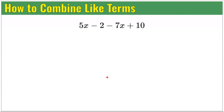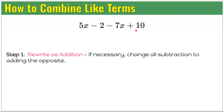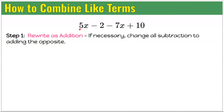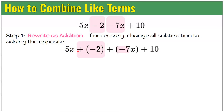Let's learn how to combine like terms to simplify an expression: 5x subtract 2 subtract 7x add 10. Step 1: rewrite this algebraic expression as addition using the rule of changing subtraction to adding the opposite. So we rewrite it as 5x add negative 2 add negative 7x add 10. This is equivalent, and now it's just repeated addition.